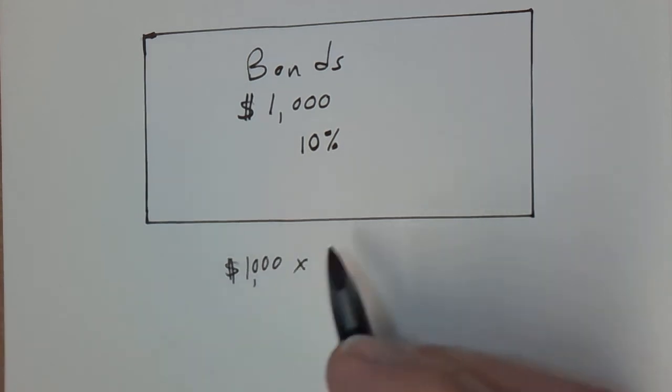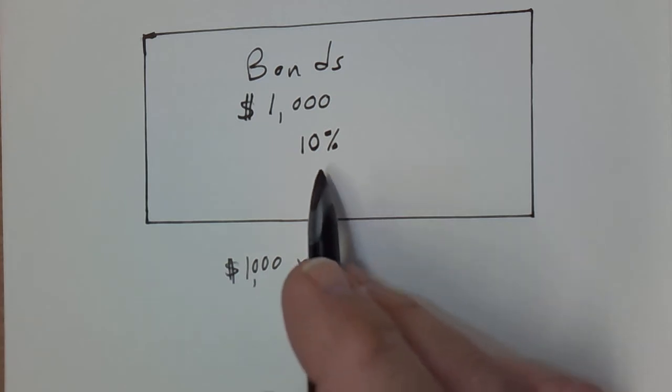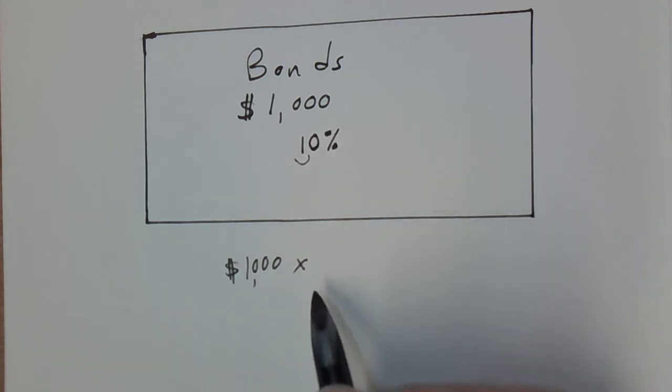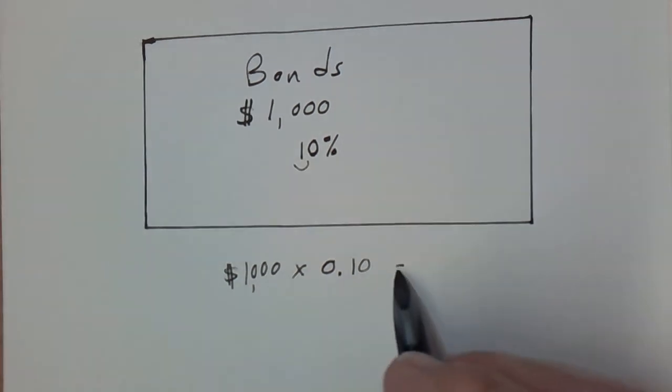And multiply it by the interest rate. Now, because 10% is an interest rate, we would turn it into a decimal by moving the decimal place over two, so we multiply it by 0.10. So that means that our payments that the investor would receive every year would be $100.